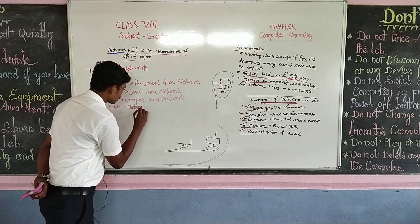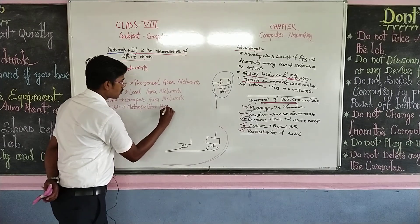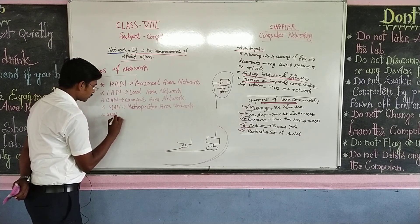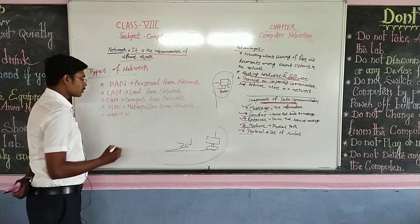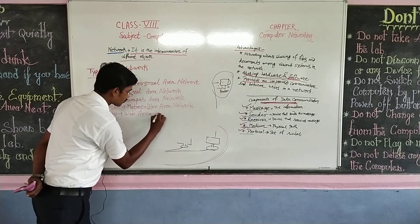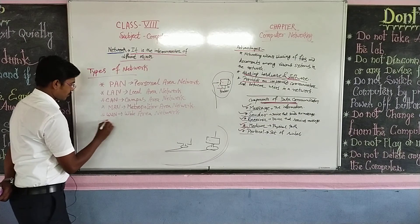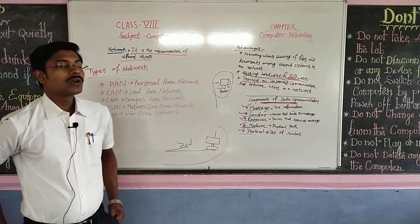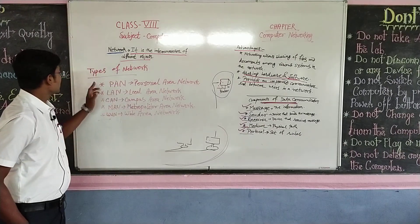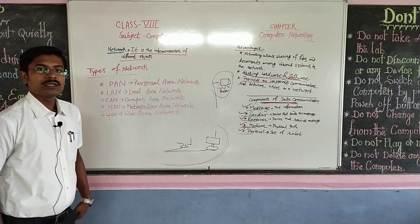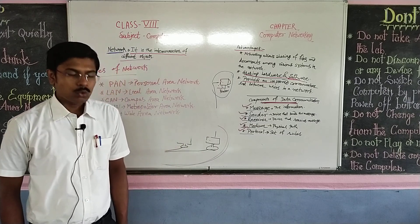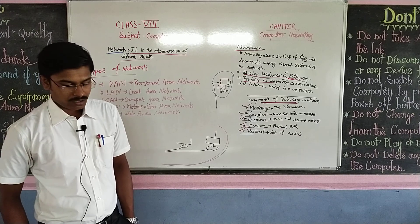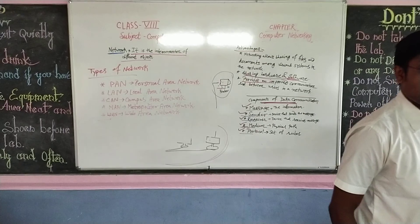Next is MAN — Metropolitan Area Network. And the last one is called WAN — the full form of WAN is Wide Area Network. I hope you all understood this session. I will discuss all these types of network in brief in my next class. I hope you all liked this video, so don't forget to subscribe to this channel and hit the bell icon. Have a great day, thank you, bye bye.